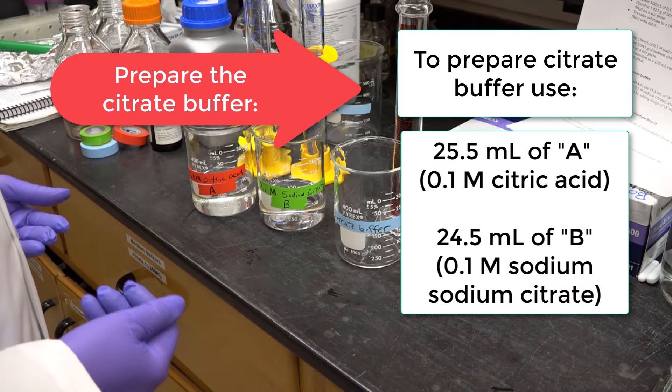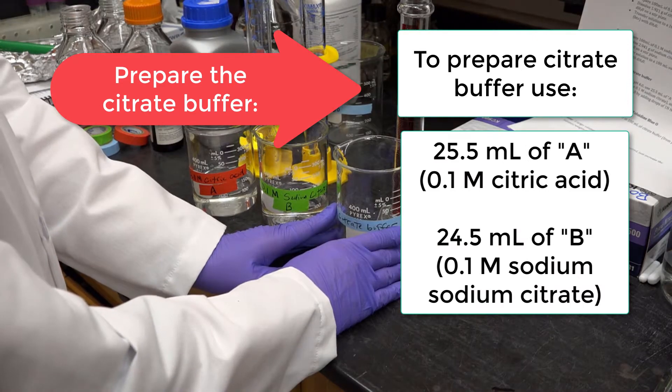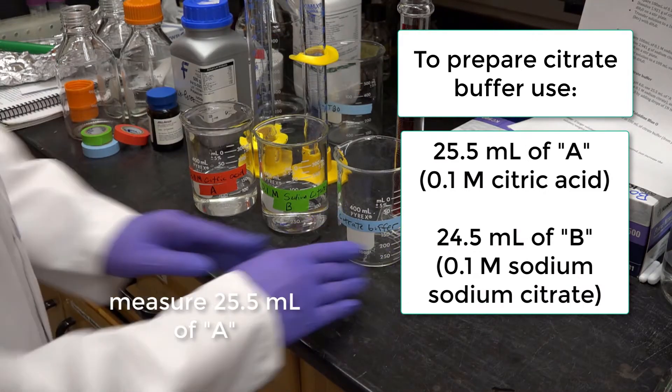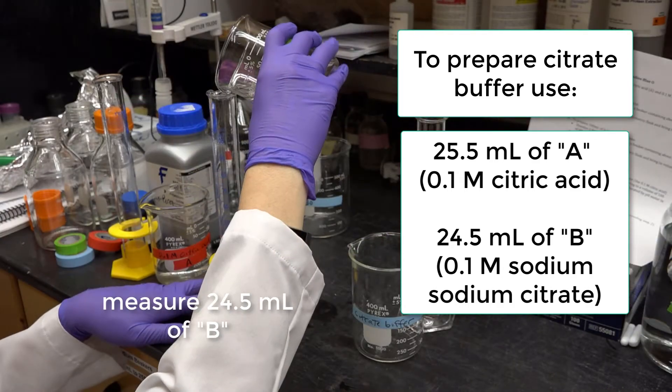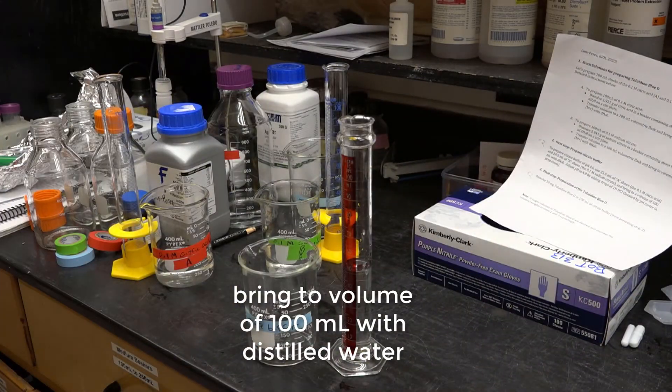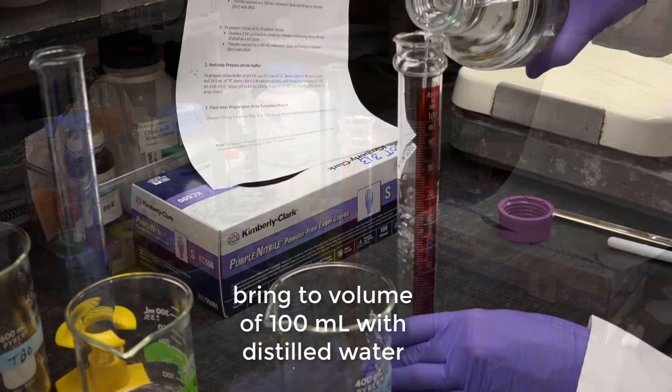So our next step is to prepare the citric buffer. I'm going to use 25.5 milliliters of A, mixed with 24.5 milliliters of B, and then I'm going to bring them to volume of 100 mils with distilled water.